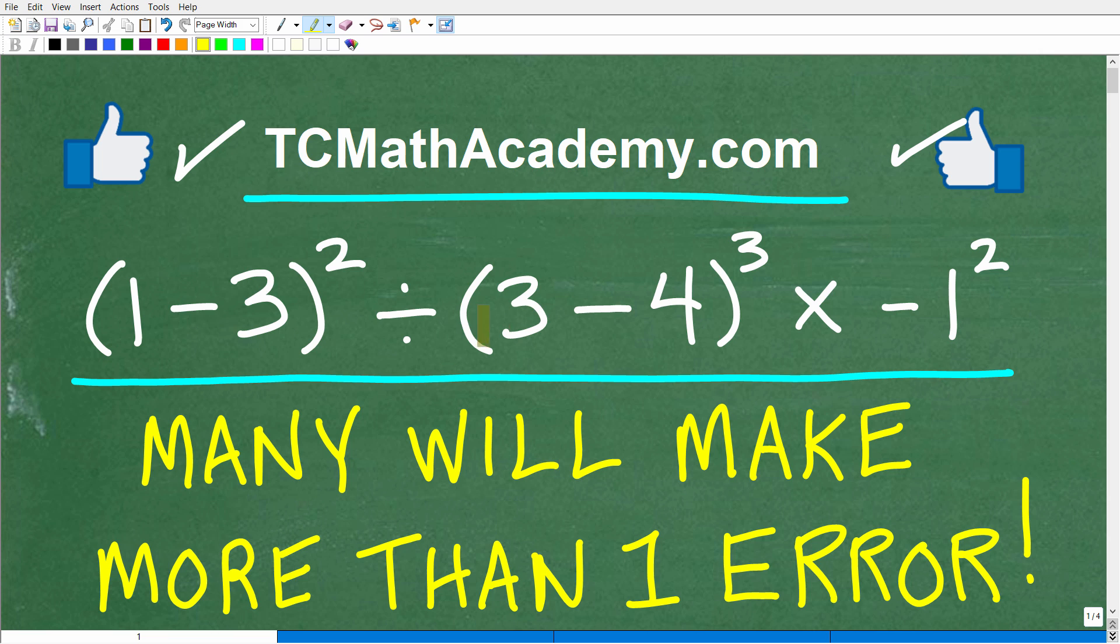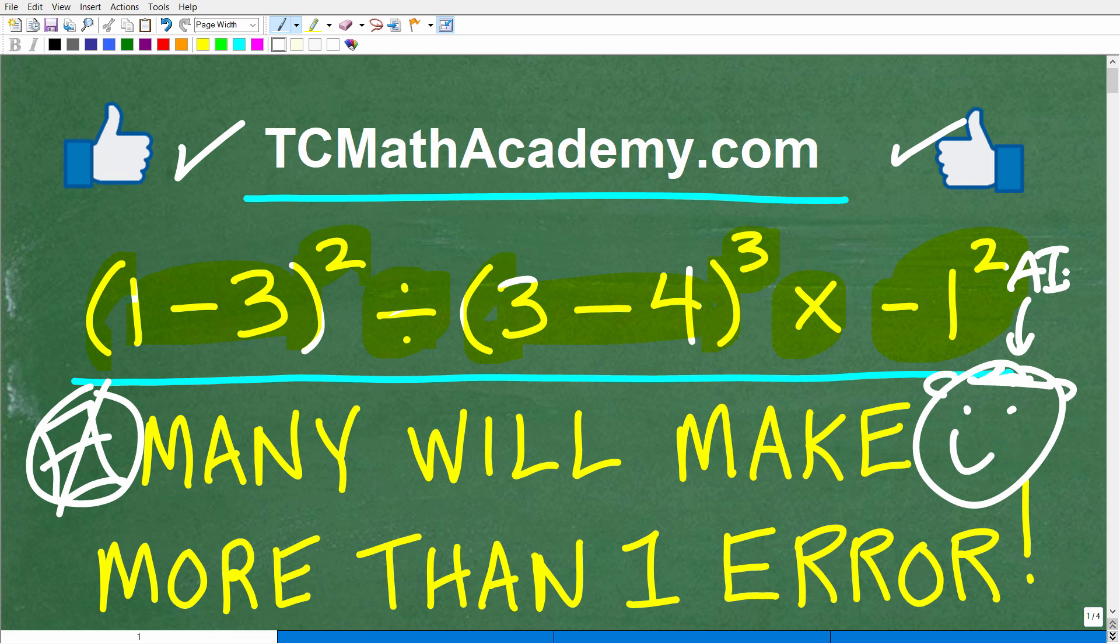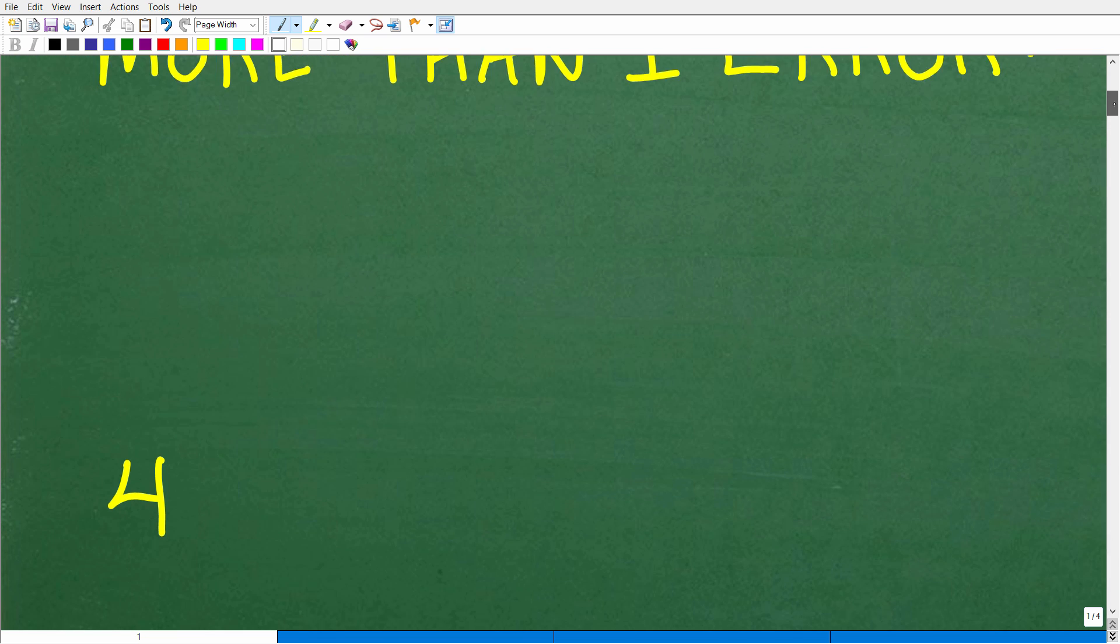Okay, so just to be clear, let's go ahead and take a look at the problem. We have (1-3)² ÷ (3-4)³ × -1². And again, we do not want to use our calculators. We just simply need to use that supercomputer located right here between your ears. That thing is so much better than any artificial intelligence out there. Matter of fact, that's actual intelligence, way better than AI. Okay, let's go ahead and take a look at the answer.